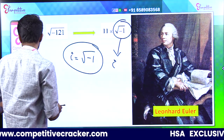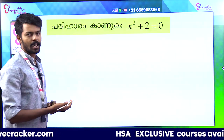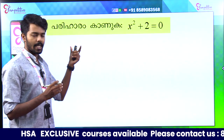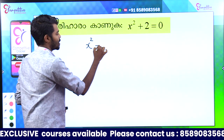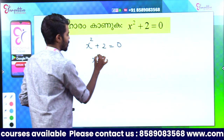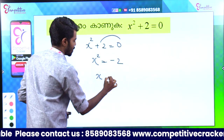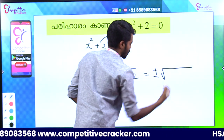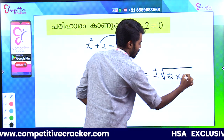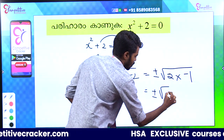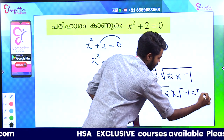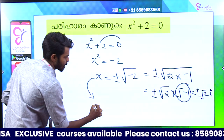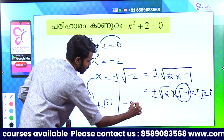Let's go further. For example, x² plus 2 is equal to 0. x² is equal to minus 2. Then x is equal to plus or minus root of minus 2. That is equal to plus or minus root of 2 into minus 1. That is equal to plus or minus root 2 into root of minus 1. That is equal to plus or minus root 2 times i. So x equals plus root 2i or minus root 2i.